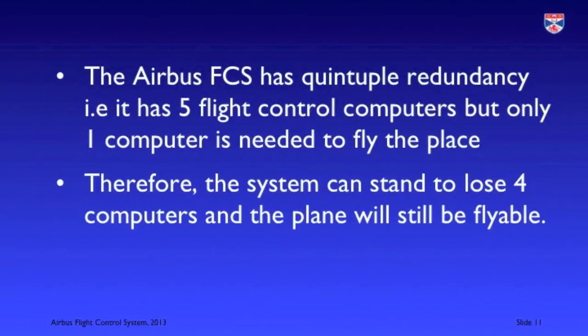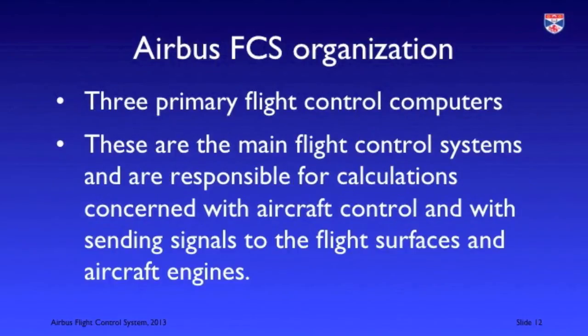The Airbus flight control system actually runs on five separate computers. The system runs simultaneously on all five of these computers but only one of them is needed to fly the plane, so it can stand the loss of four computer systems before flying the plane becomes impossible. The computer organisation is based around three primary flight control computers, giving triple redundancy at the primary computer level.